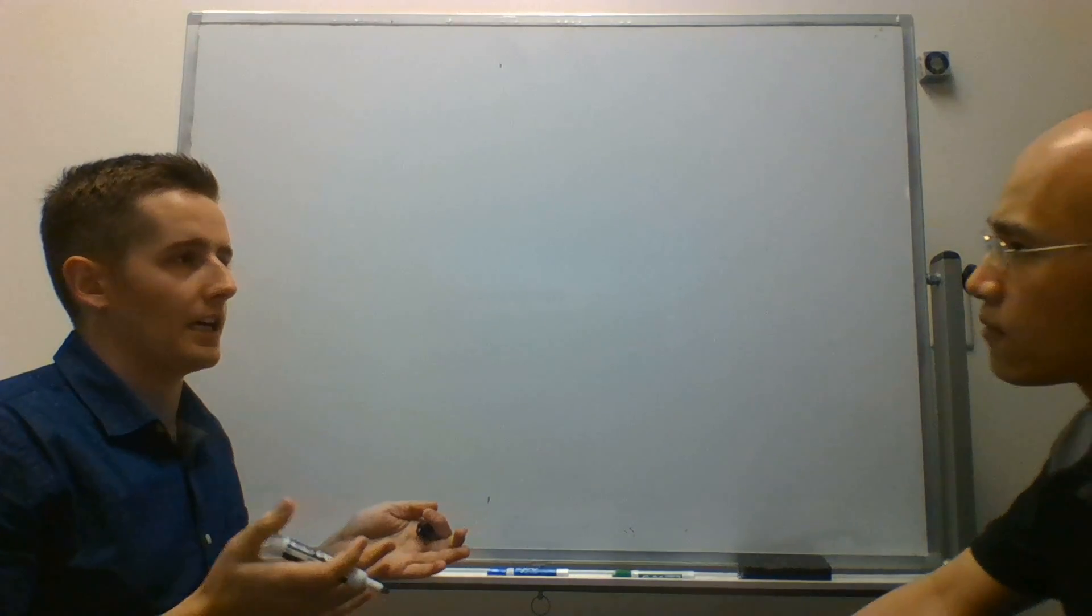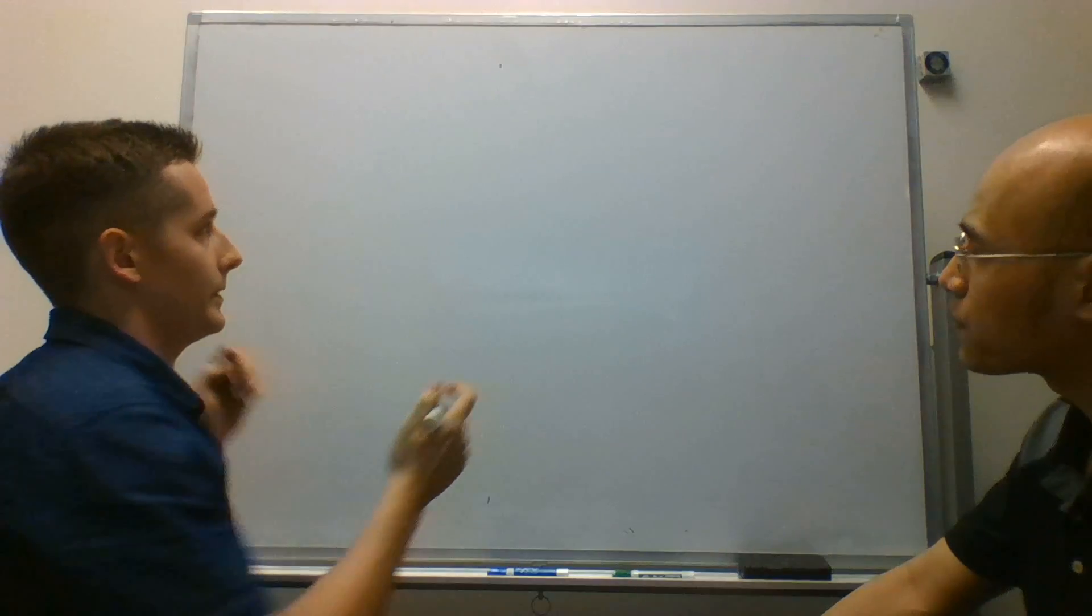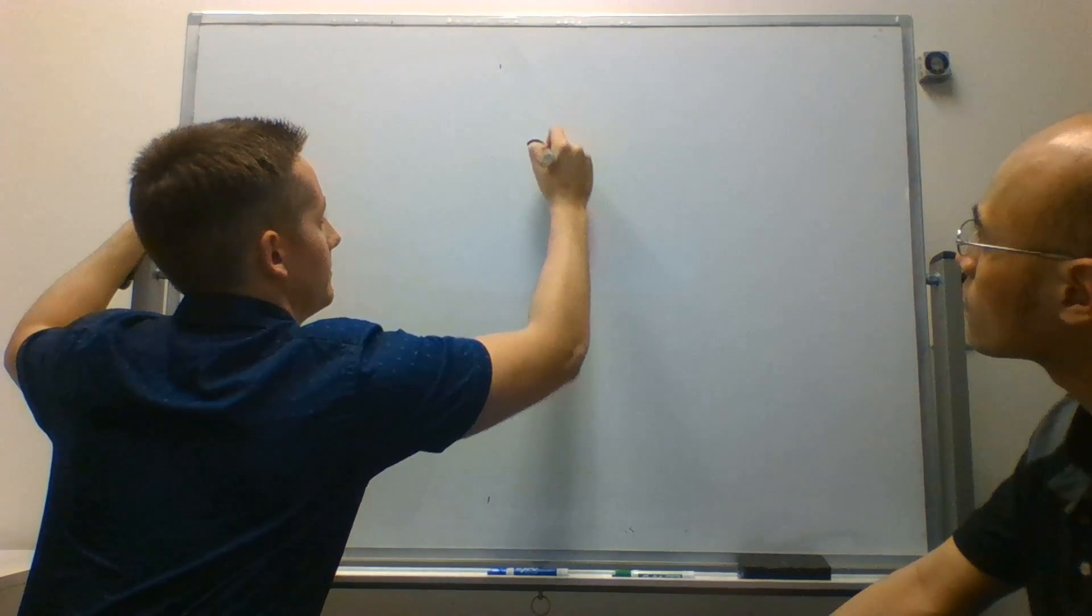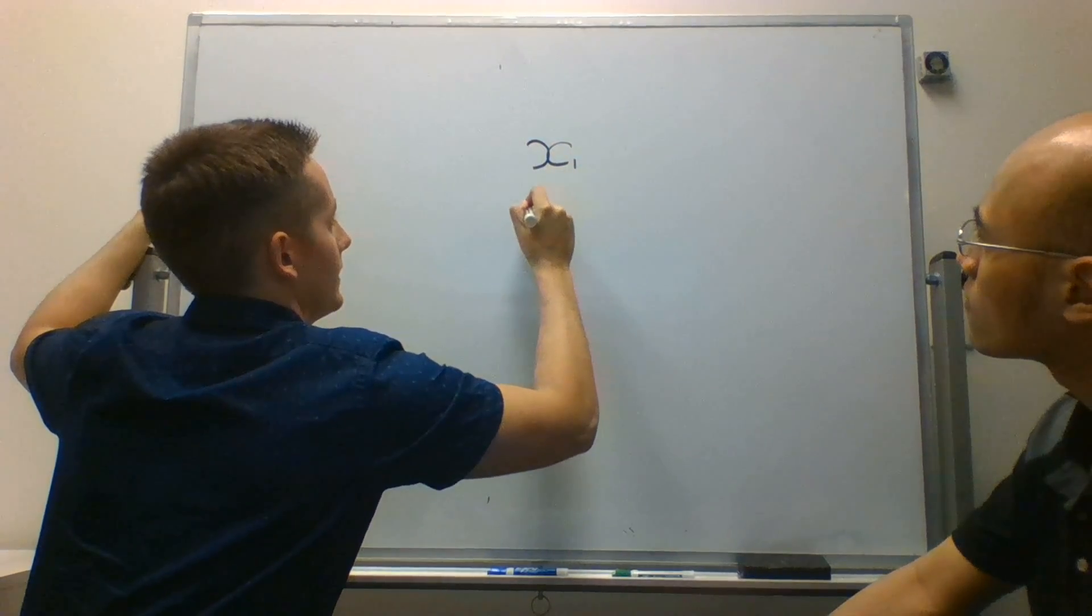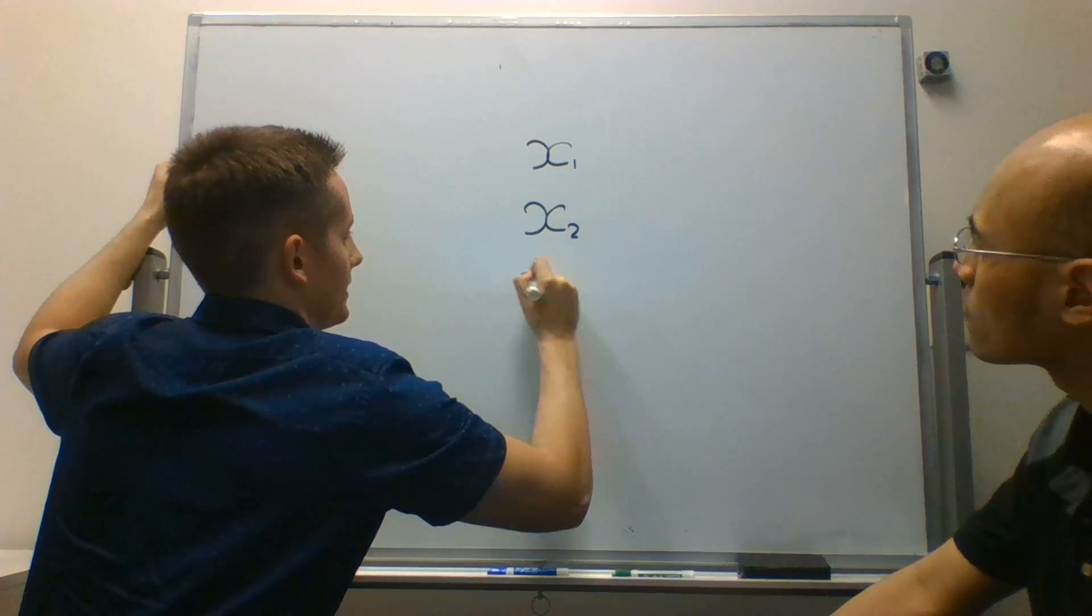Here, let's say we have an example of three different features in our variable set. So we have x1, x2, and x3.